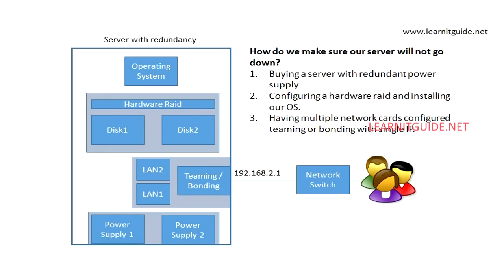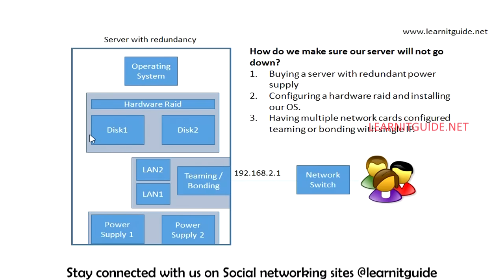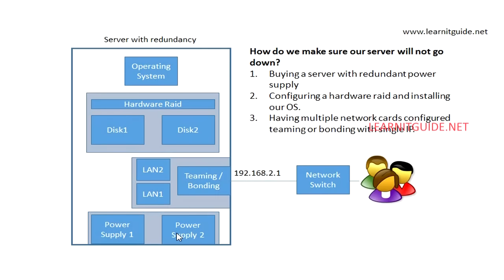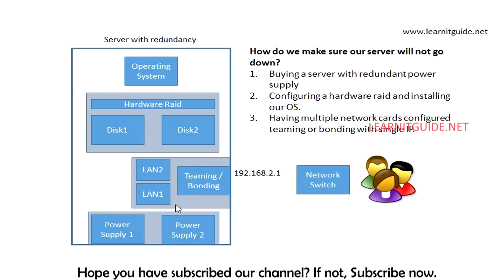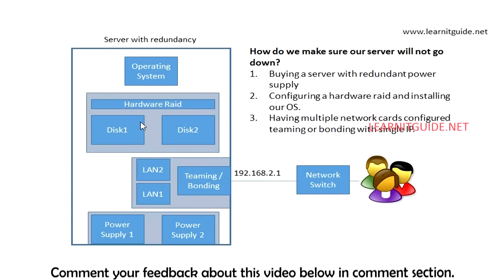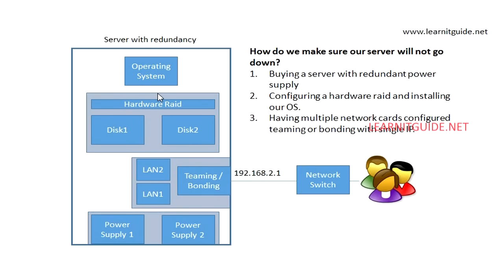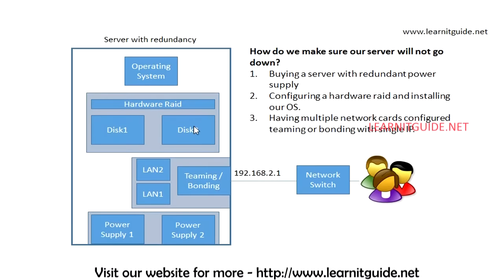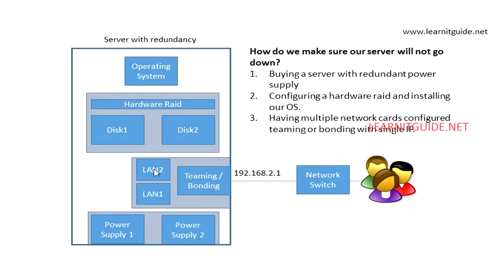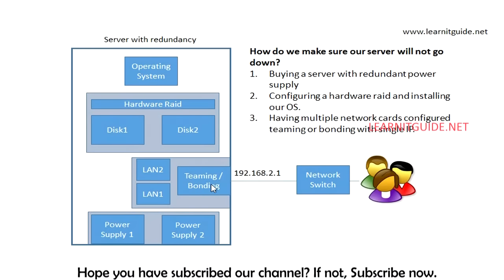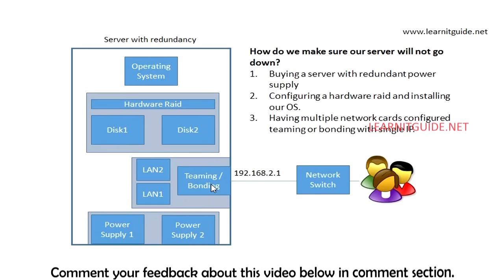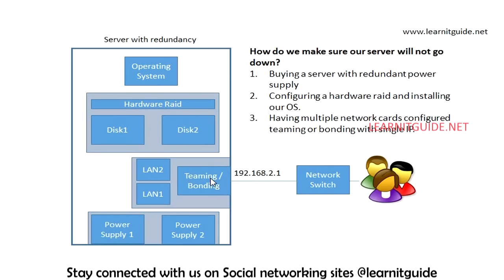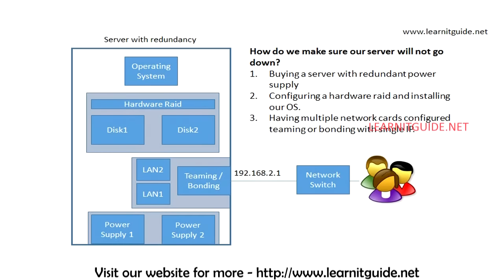Normally in an infrastructure, to ensure availability, we buy a server with redundant power supply — two or four power supplies — so if one fails the server stays available. For disk redundancy we configure hardware RAID so if one disk fails, RAID keeps the OS running from another disk. For the network card we configure multiple network cards with teaming or bonding under a single IP, ensuring redundant hardware.